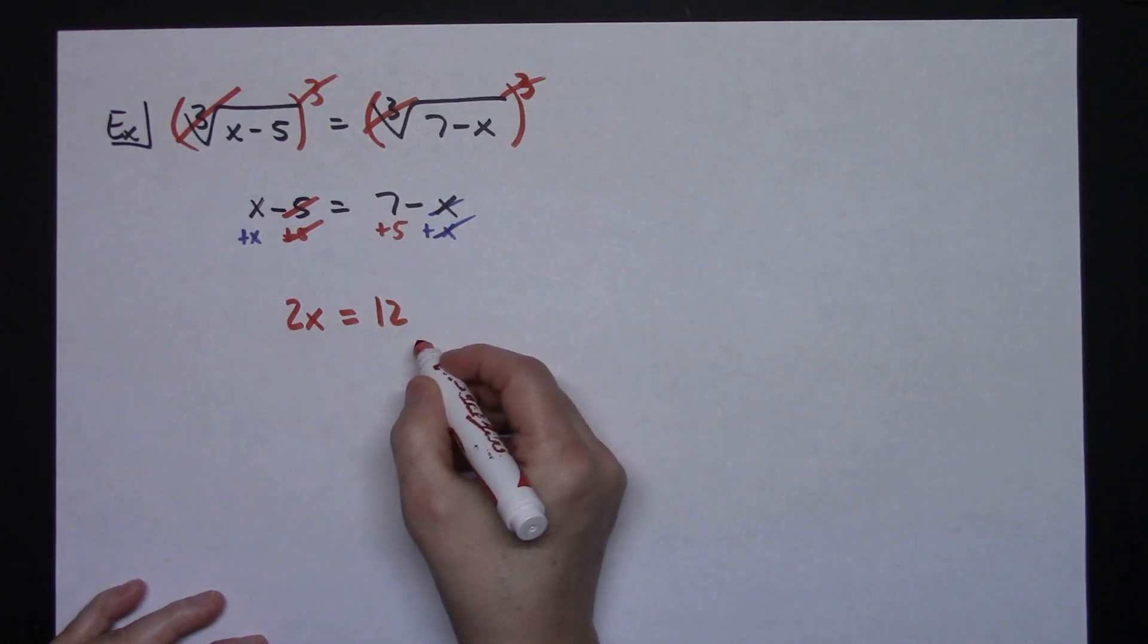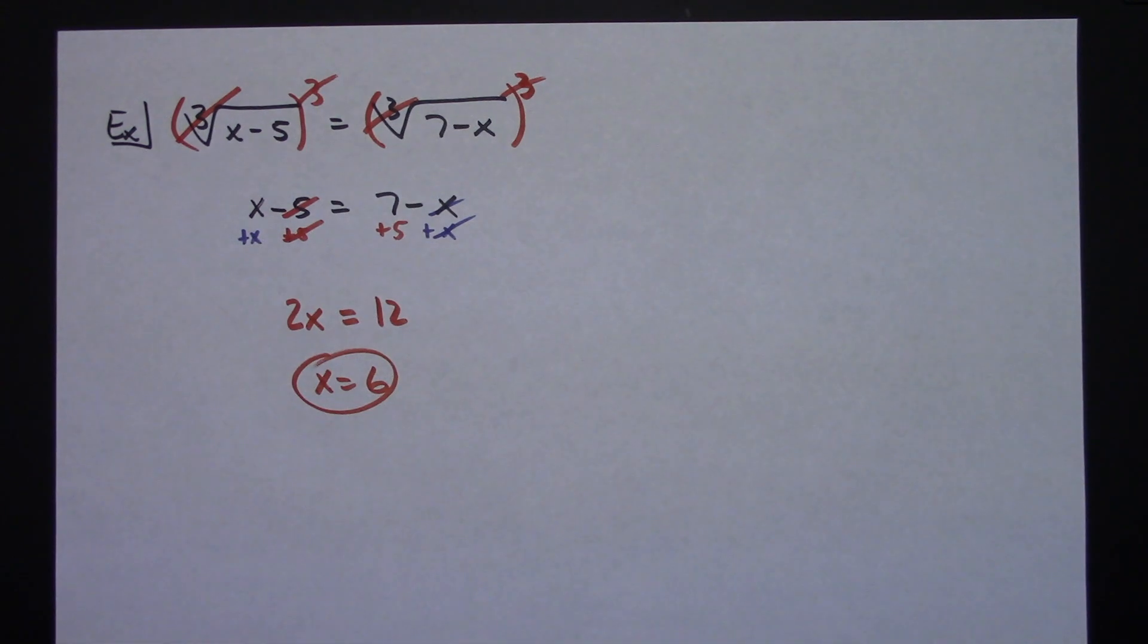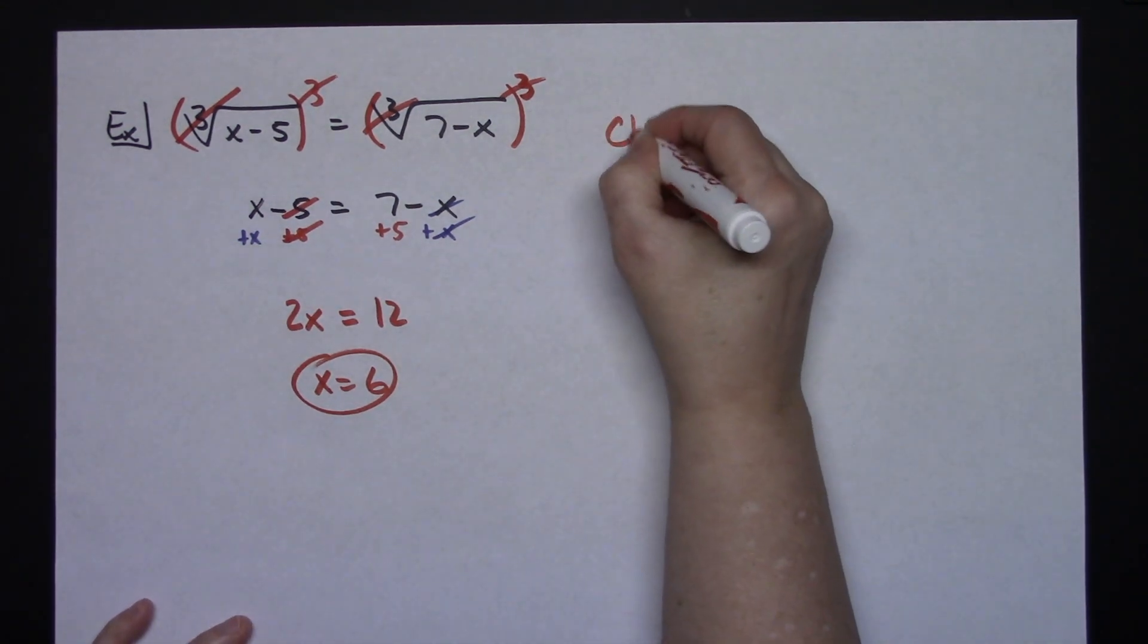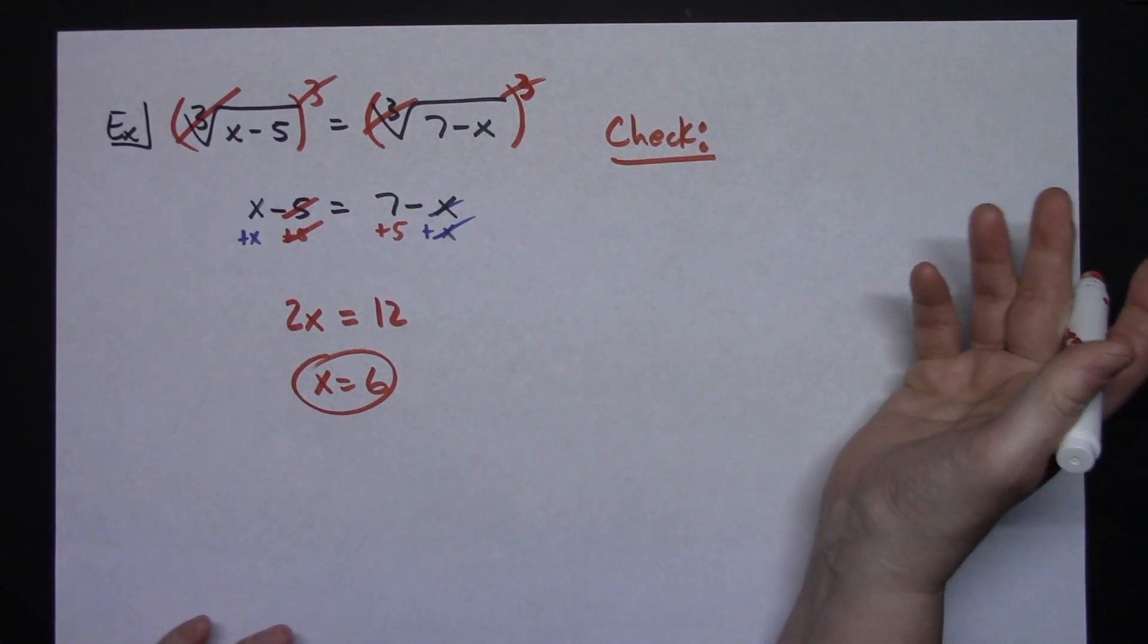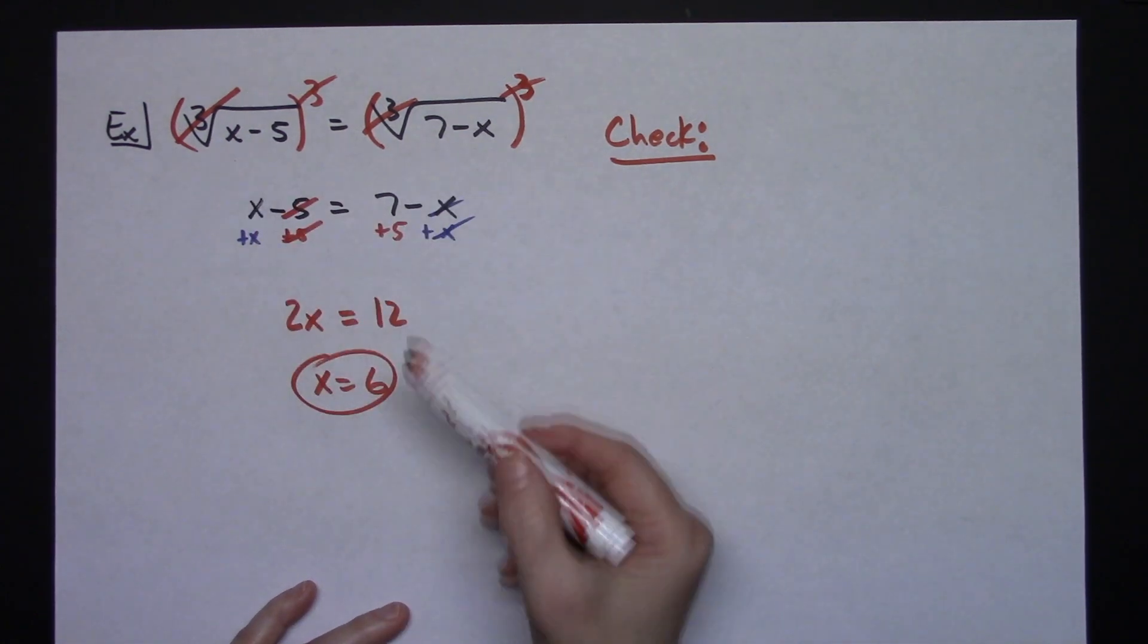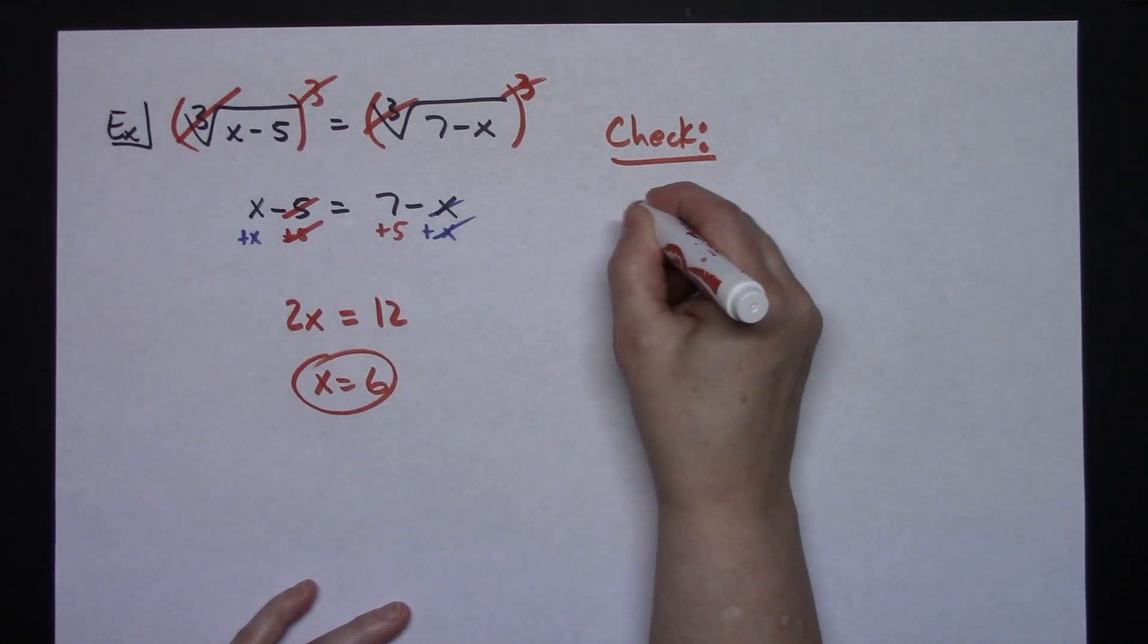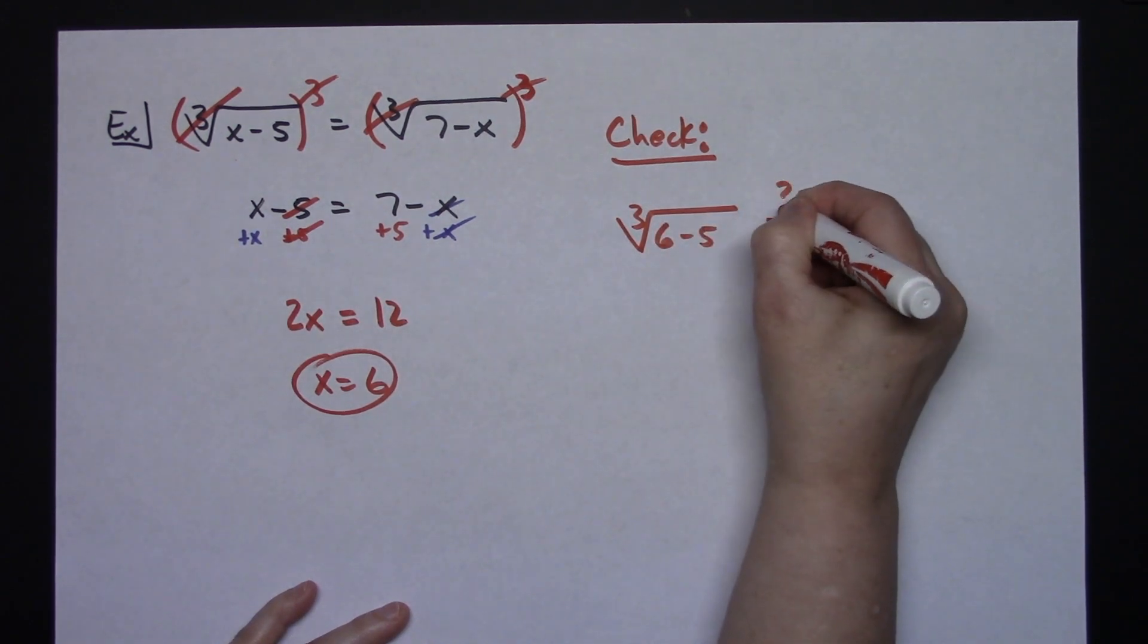Then dividing both sides by 2, x is going to be 6. So now I want to check this answer. Every time—doesn't matter whether it's a cube root or a square root—you do need to check. So this time I'm going to take x equals 6 and plug it into both locations. I'm going to have the cube root of 6 minus 5, and I'm going to ask myself, is...